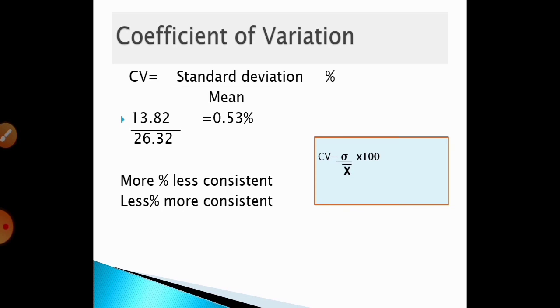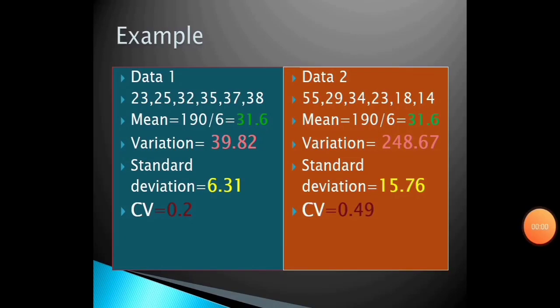A higher percentage means the data is less consistent; a lower percentage means it is more consistent. Let us now see an example covering the concepts of variance, standard deviation, and coefficient of variation.